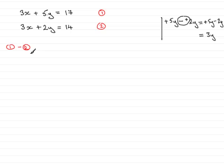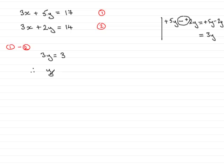So when it comes to doing 1 take away 2, the 3x's cancel and we have simply 3y. In this column we have 17 and then we take away 14, so 17 take away 14 is 3. All we need to do now to solve this equation is divide both sides by 3. So 3y divided by 3 is y, and 3 divided by 3 is 1. So we have that y equals 1.